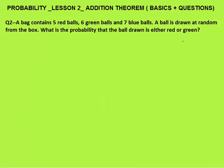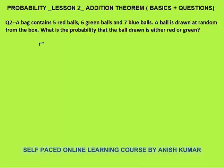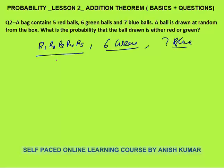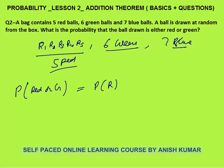Question 2: a bag contains 5 red balls, 6 green balls, and 7 blue balls. A ball is drawn at random from the box. What is the probability that the ball is either red or green? We apply the addition theorem: P(red or green) = P(red) + P(green) − P(red and green). Total balls = 5 + 6 + 7 = 18.